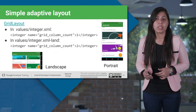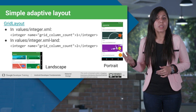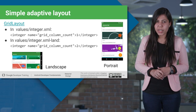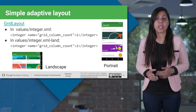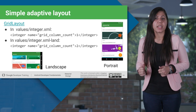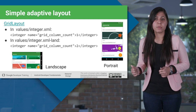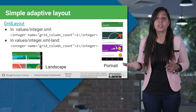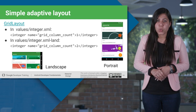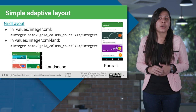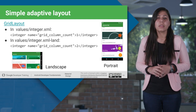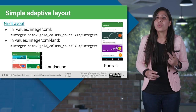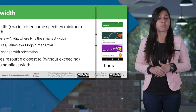Grid layout contains the UI components in columns and rows. To provide an alternative resource to display components, we specify it by mentioning the number of columns to display. As you can see, we added a resource file integer.xml-land to support landscape mode where we want two columns to be displayed.